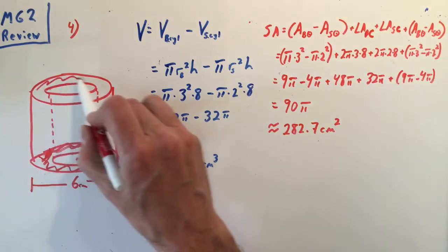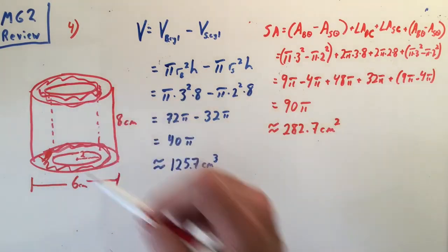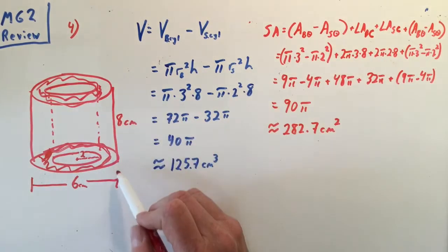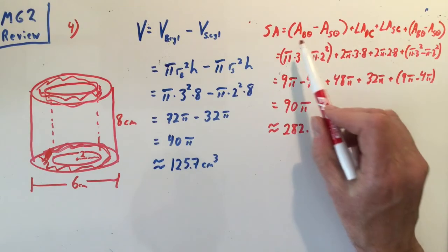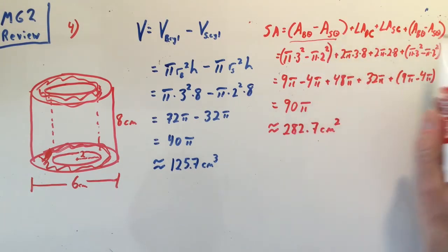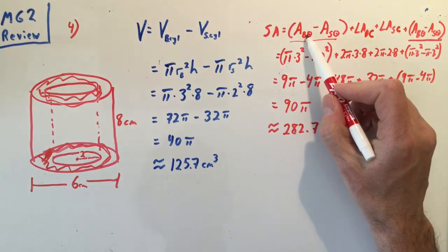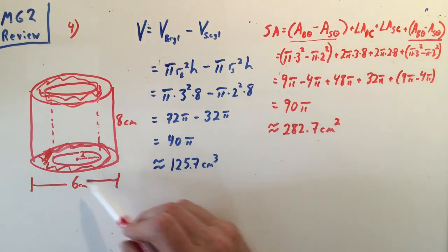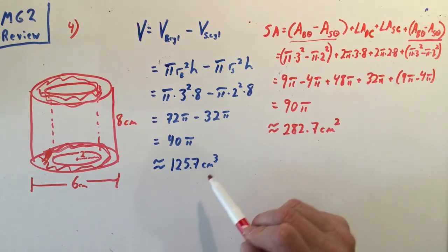Then I know the values of r and the values of h for all of these, and those are the only numbers you need. This big circle is π times 3², the small circle is π times 2², the lateral area is 2πrh. So for the outside lateral area: 2π(3)(8).